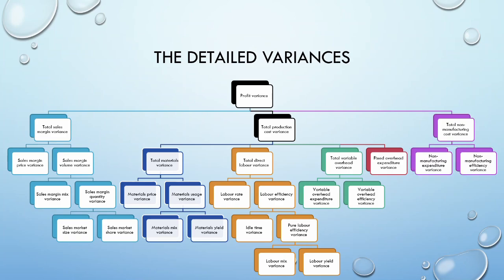Our final category of variances is our non-manufacturing cost variances. Depending on if we can develop standards which are useful for control purposes, we may just have a total variance or we may be able to break it up into an expenditure and efficiency component. We will look at each of these variances in detail as we progress through the series. While it may seem easy to memorize a bunch of formulas, this is not useful. Rather, I encourage you to carefully understand what each variance is calculating. Some similarities we should see are that the calculations of our price variances are all similar. These variances include our sales margin price, our materials price, our labor rate, our variable overhead expenditure, and our non-manufacturing expenditure, if applicable.